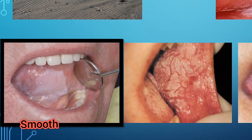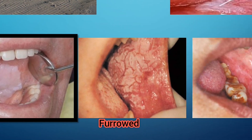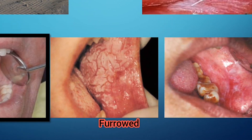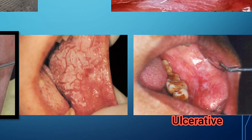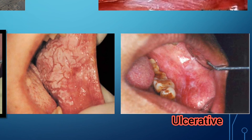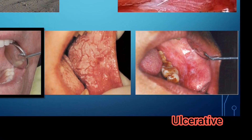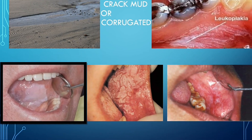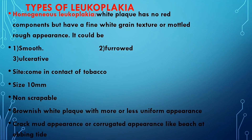Here is a picture of the smooth type of leukoplakia. This is the furrowed type — as you can see, there are a lot of lines and it looks like furrows. Here is the picture of the ulcerative type — you can see there are a lot of ulcers. The site is where tobacco comes in contact, such as the buccal cavity or sometimes the lips.